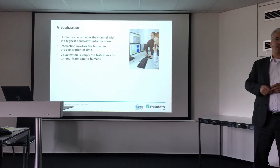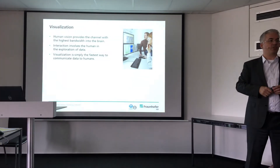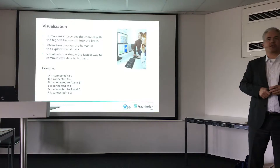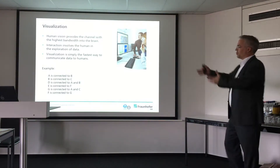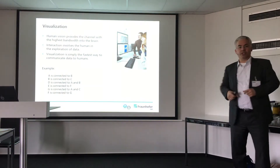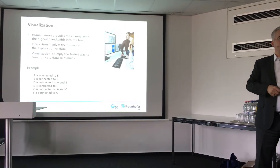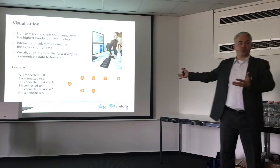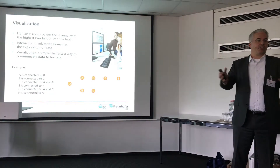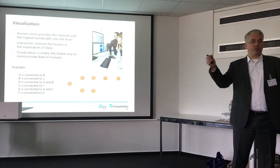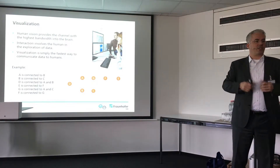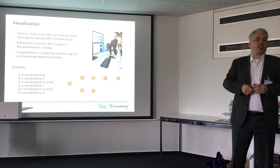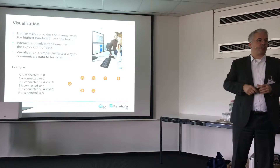In one sentence, visualization is really just simply the fastest way to communicate data to humans. For example, we could read text — A is connected to B, B is connected to C — and you might start to build a picture of what this graph might look like, but when I show you the graph, of course, it's much faster. This goes down to the simple truth that perceiving two dots and a line between them is much faster than reading the sentence 'this dot and this dot are connected.' We can exploit this with graphs and all kinds of visual elements to make the data-brain connection a lot faster.